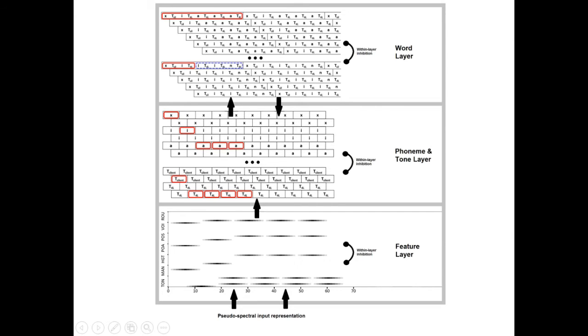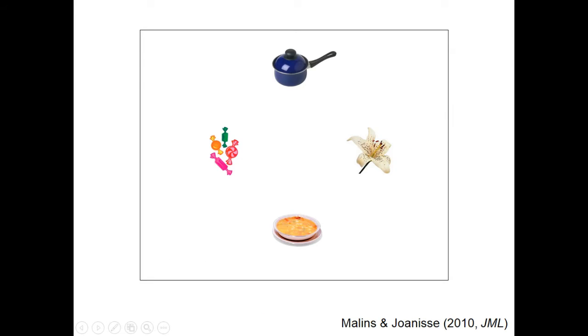During this process, other lexical items which overlap with targets in phonemes and or tones can also become partially active. In this way, we were able to simulate recent data from human subjects in a Visual World Paradigm Eye Tracking study, which looked at how native Mandarin speakers resolve competition between lexical items sharing phonemes and or tones.